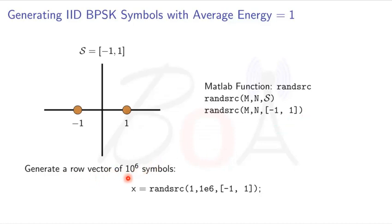Here is an example. Let us say that we want to generate a row vector of 10 raised to the power 6 symbols. In that case, the command will be RANDSRC 1, that is number of rows, and 1e6, that is 10 to the power 6 representing number of columns, and the source alphabet minus 1 and 1. This will generate a vector of 10 raised to the power 6 BPSK symbols.